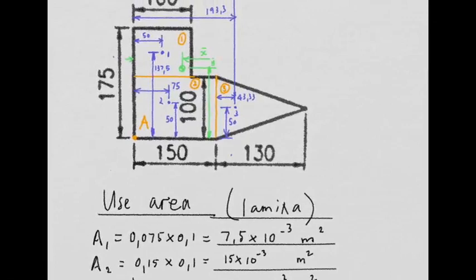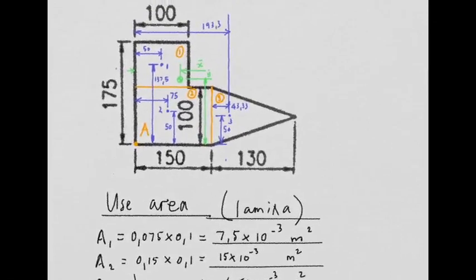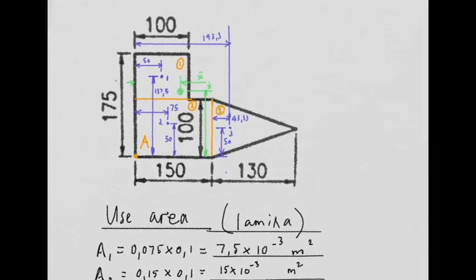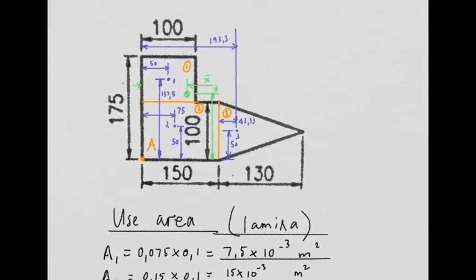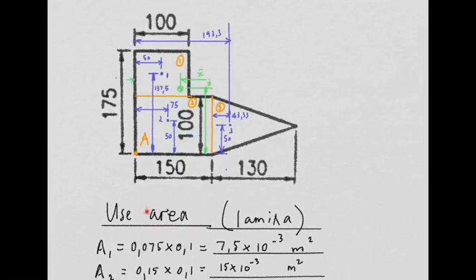So we need that dimension, that dimension, and this dimension as well. Next thing is to calculate the areas of each piece. Remember that in the very first example we used weight when we were working with a three-dimensional object, and then if it was consistent density we cancelled out the density and we were working with volume. We can go right down to just using areas in each case.